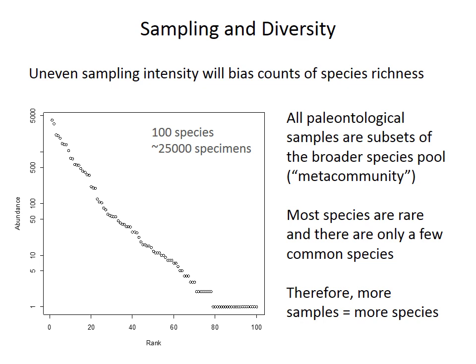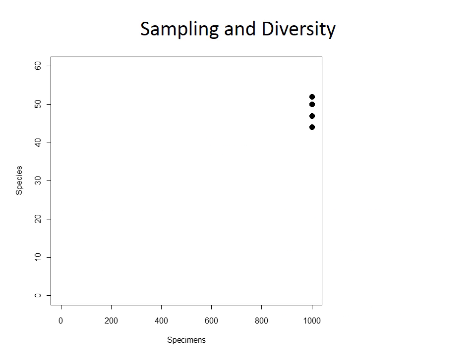If you collect more specimens from your site, you'll find more species. If you collect one individual, you can only find one species — it's not possible to find ten species if all you collect is one shell. If you collect ten shells, you might find three or four species. If you collect a hundred shells, you can obviously find more. With a thousand specimens, maybe we'll find close to 50 species; with 500 specimens, maybe only 40 or so.